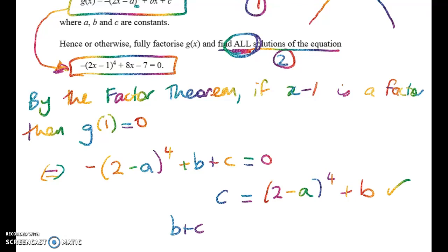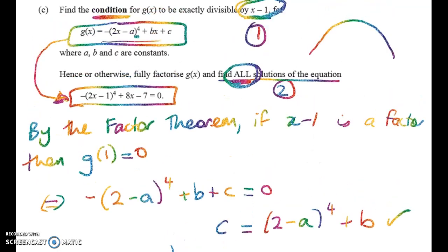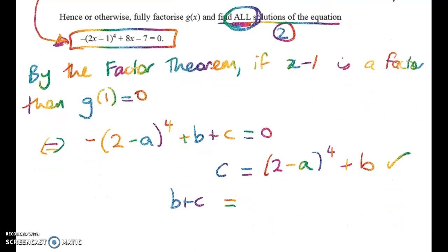The slightly cleaner way to write it is to say, if this quartic in this form here is going to have x minus one as a factor, then we can also say that b plus c must equal (2 minus a) to the power of 4. So that's probably the most elegant way to write that condition.